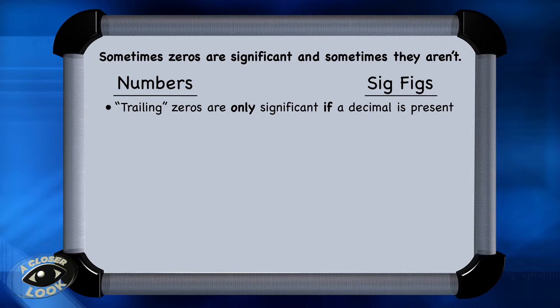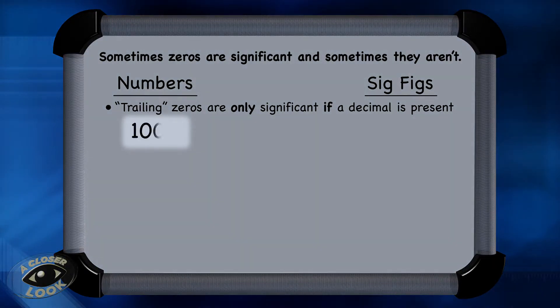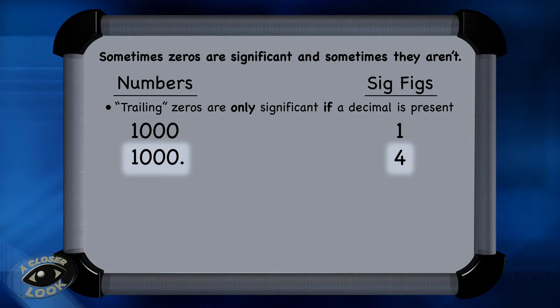Trailing zeros are only counted as significant if there is a decimal point present. The number 1000 with no decimal point has only one sig fig. The number 1000 with a decimal, though, now these trailing zeros become significant, so there are four sig figs. And with 1000 with a decimal and then two zeros after it, count all of those zeros as sig figs for a total of six.